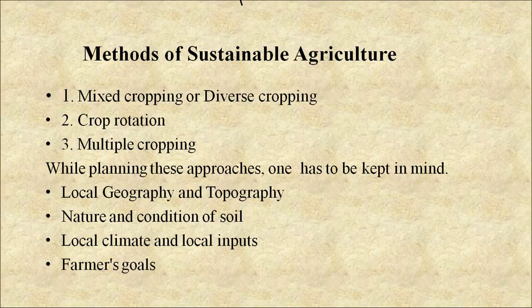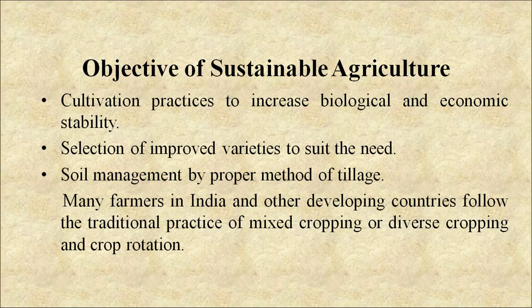The methods of sustainable agriculture include mixed cropping or diverse cropping, crop rotation and multiple cropping. While planning these approaches, one has to keep in mind local geography and topography, nature and condition of soil, local climate, local inputs and farmers' goals. The objectives of sustainable agriculture include cultivation practices to increase biological and economic stability, selection of improved varieties to suit the need, and soil management by proper method of tillage. Many farmers in India and other developing countries follow the traditional practices of mixed cropping and crop rotation.